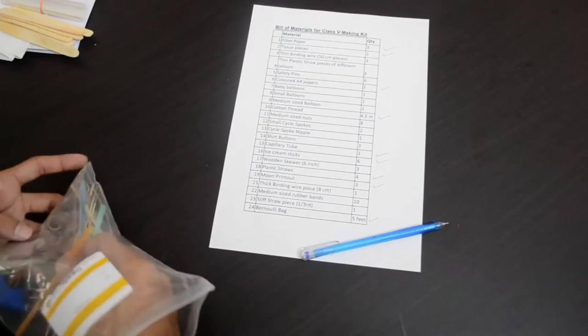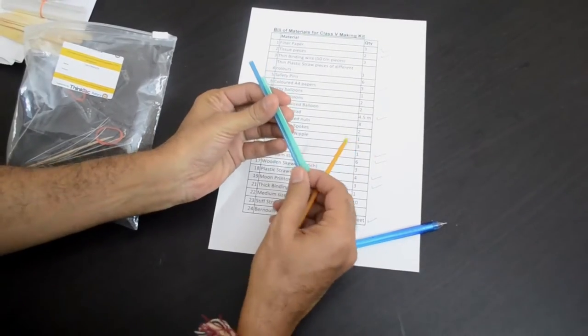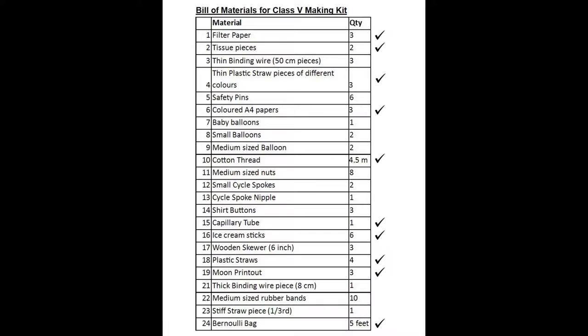Then you will find these colorful thin straws. These are the thin straws, colorful straws. There will be 3 pieces like this. That is item number 4, thin plastic straw pieces of different colors, 3 of them. If you want to add color after using the capillary tube, you can also make use of this straw piece.